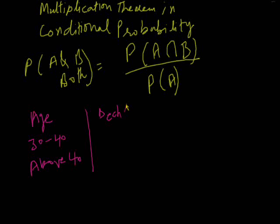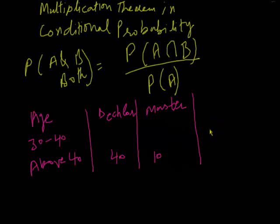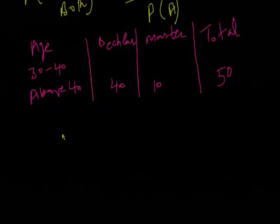Bachelor's degree and master's degree. Bachelor degrees are 40 and master degrees are 10, and total is 50 students. Total number of students is 200.